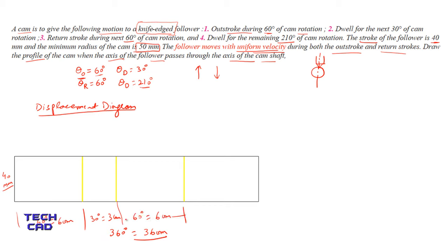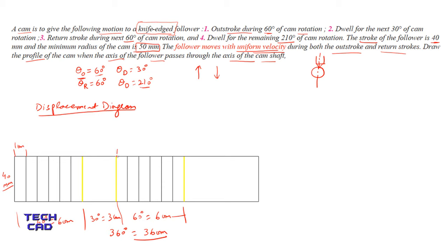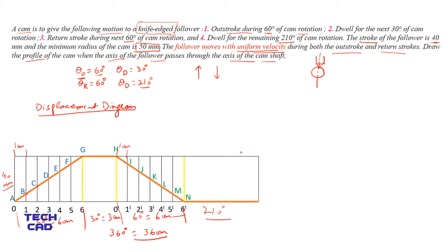Divide the outstroke angle (6 cm) into 6 equal parts of 1 cm each. In the same way divide the return angle into 6 equal parts of 1 cm each. Provide naming to all the divisions. For uniform velocity, the follower rises as a straight inclined line during outstroke, remains flat during dwell, then returns as a straight declining line during return stroke, and rests for the final dwell angle.